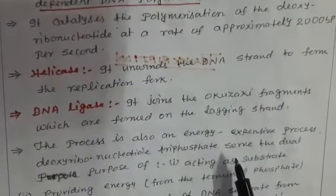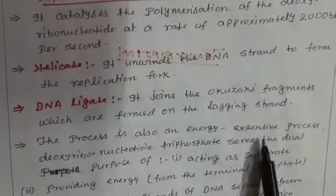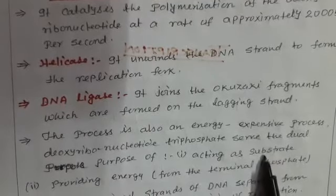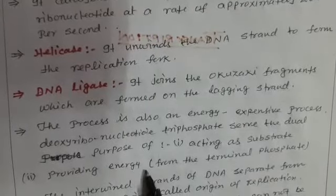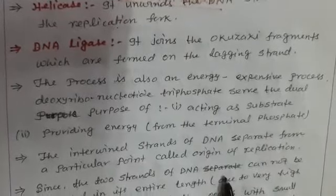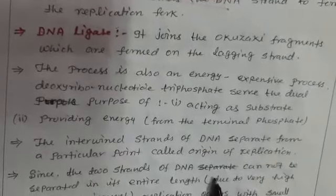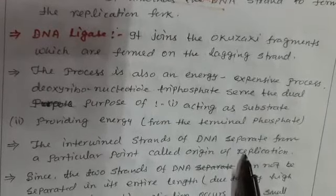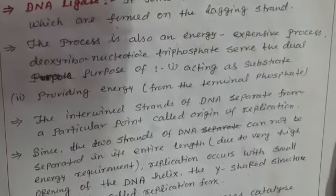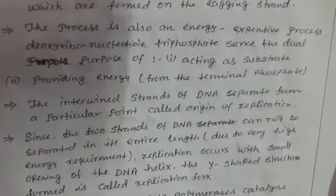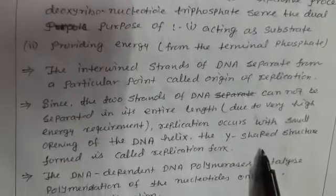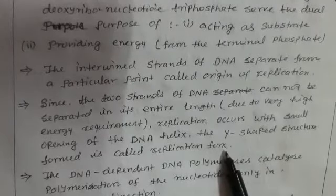The process of replication is also an energy-expensive process. Deoxyribonucleotide triphosphates serve the dual purpose of acting as the substrate as well as providing energy from the terminal phosphate. The intertwined strands of DNA separate from a particular point called the origin of replication. Since the two strands cannot be separated in their entire length due to very high energy requirements, replication occurs with a small opening of the DNA helix, forming the Y-shaped replication fork.